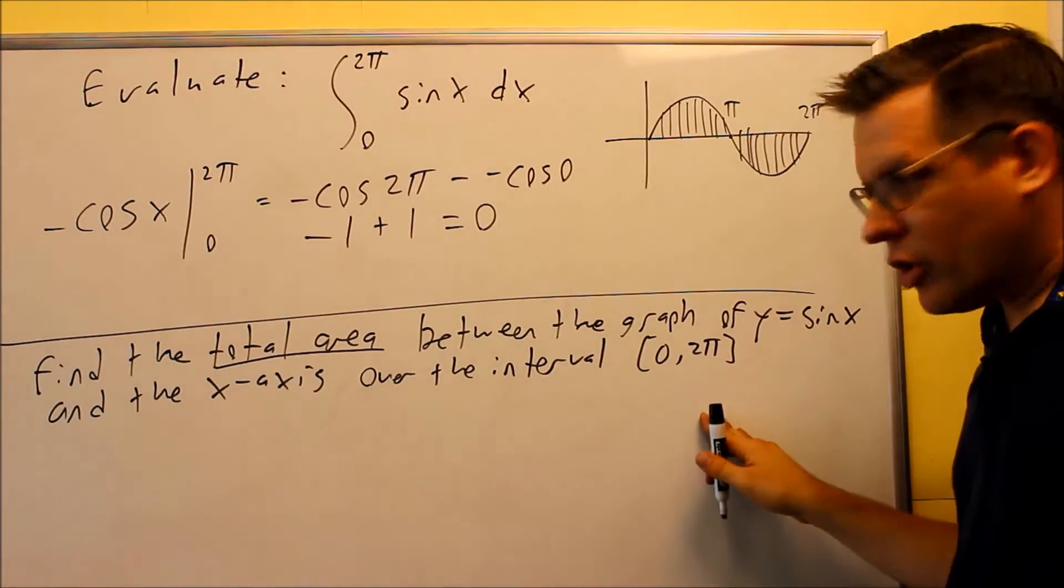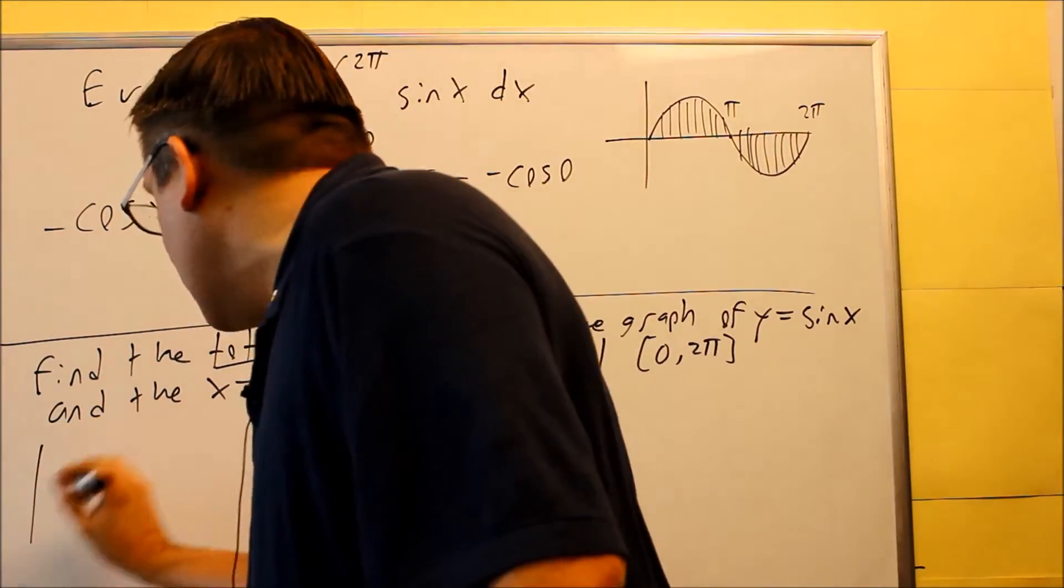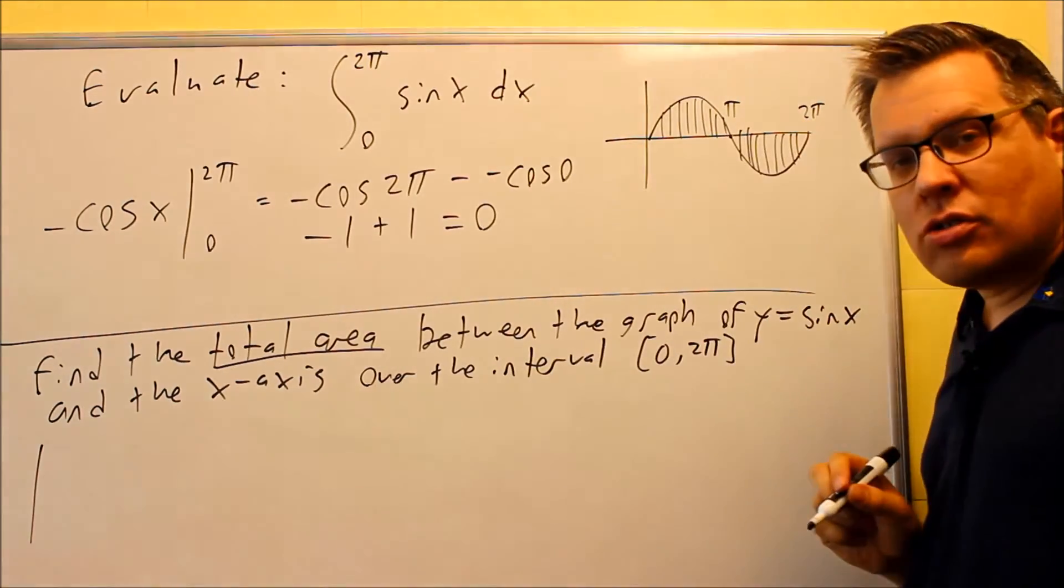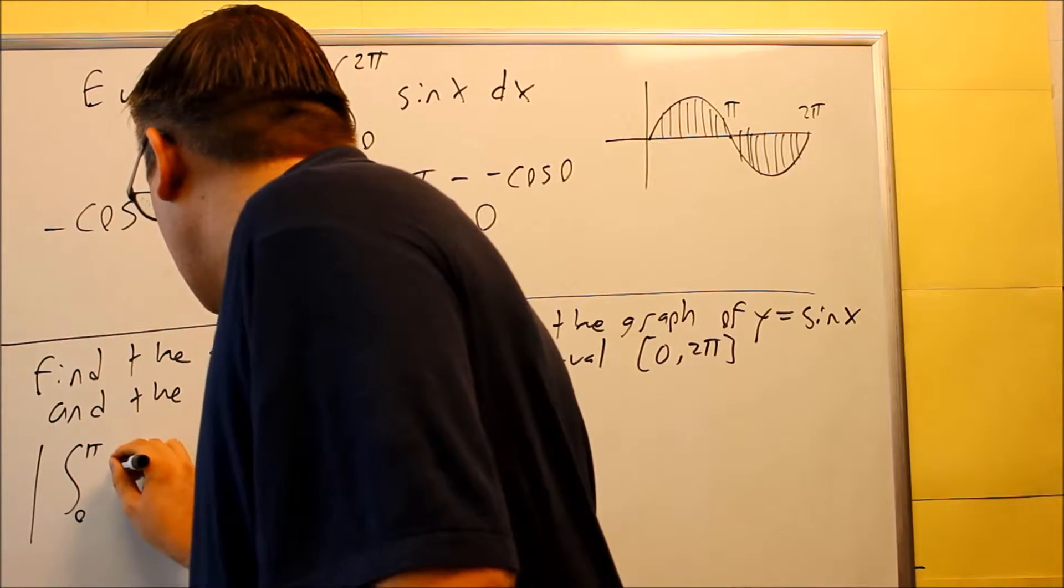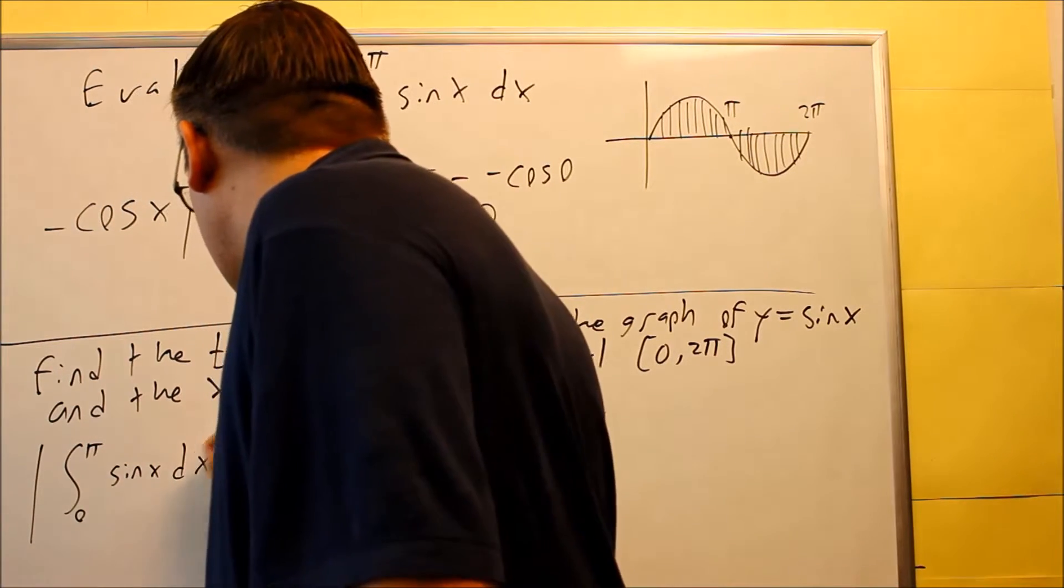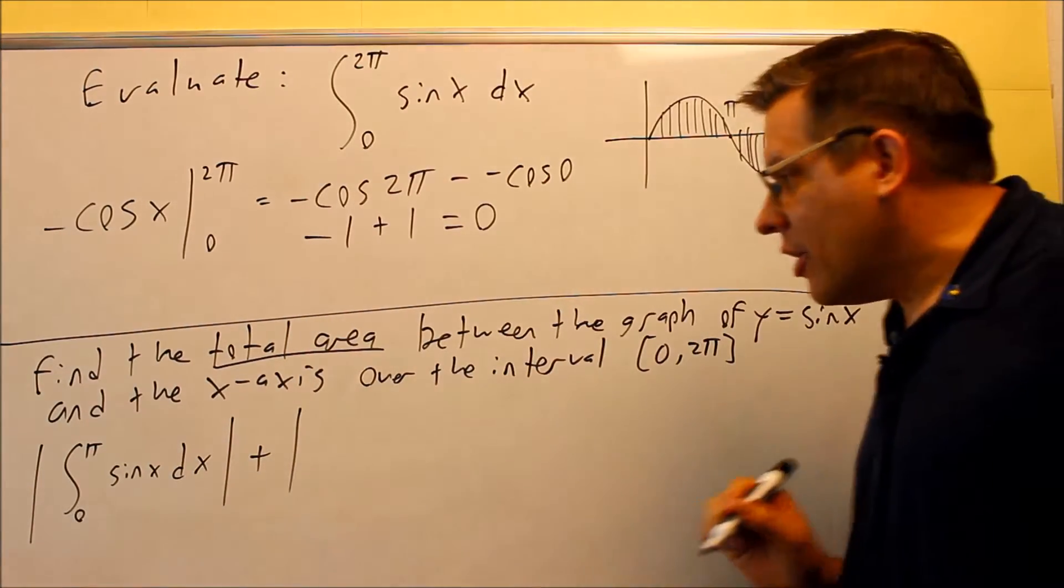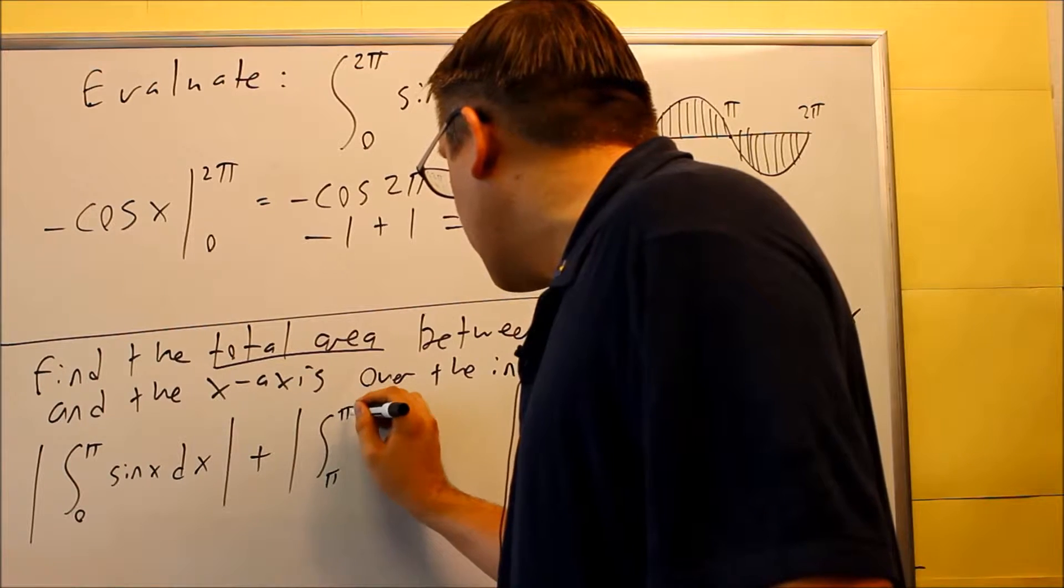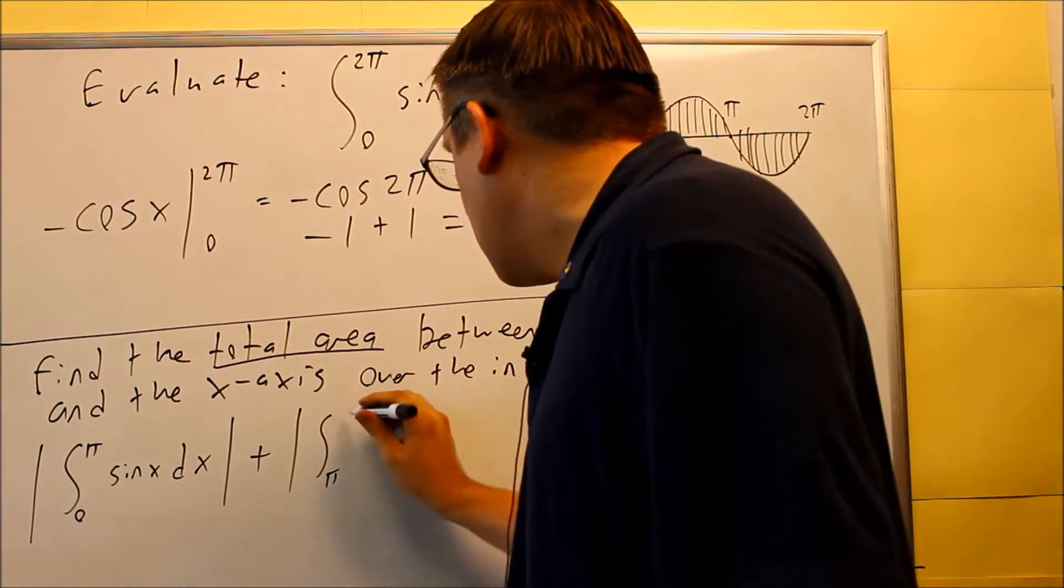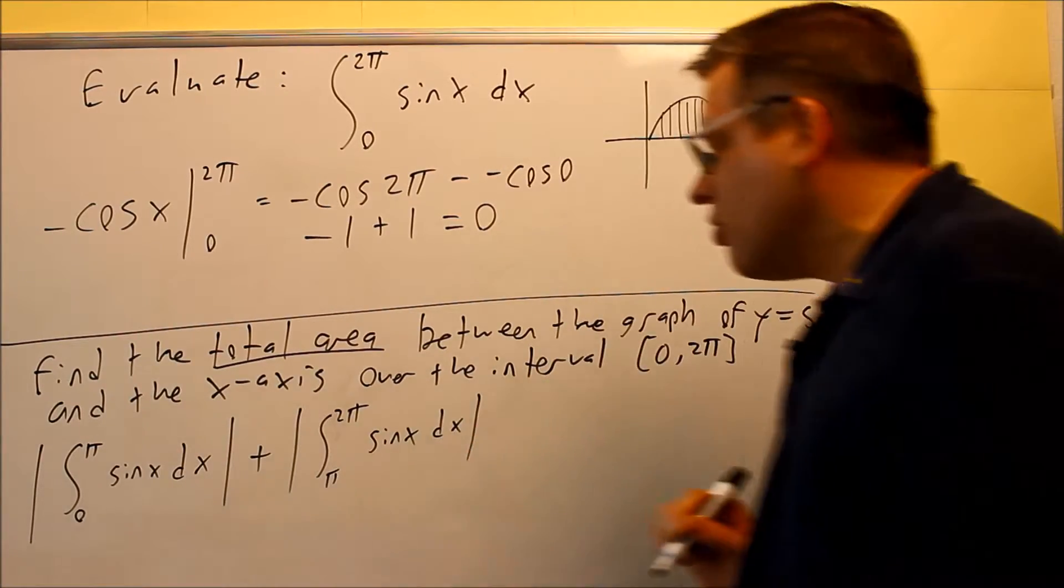So if you're going to do it this way, here's how you're going to do it. You're going to put absolute values around each of the two integrals. You're going to do one integral from 0 to π of sine x dx, plus you're going to do another one with absolute values, integral from π to 2π, and that's sine x dx.